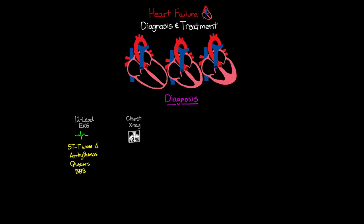The next diagnostic test is a chest x-ray, and there are two big things we're looking for. The first is cardiomegaly — the enlarged heart visible on x-ray, which can result from both systolic and diastolic heart failure. We're also looking for pulmonary edema, which can show us the severity of heart failure and confirm left-sided heart failure.